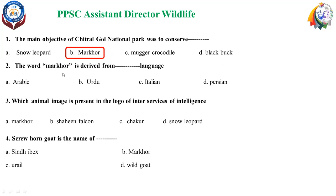The next question: The word Markhor is derived from Persian language — already told. And question number three: Which animal image is present in the logo of Inter-Services Intelligence (ISI)? Options are: A — Markhor, B — Shaheen Falcon, C — Chakor, D — Snow Leopard.